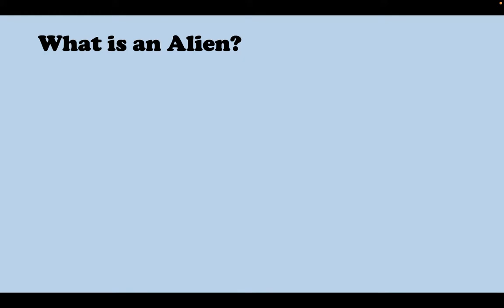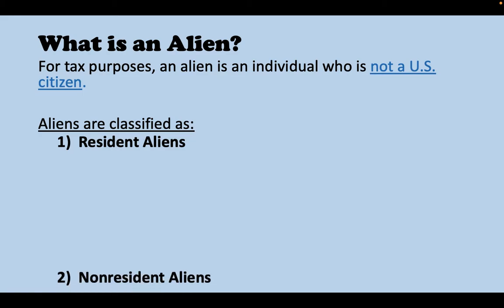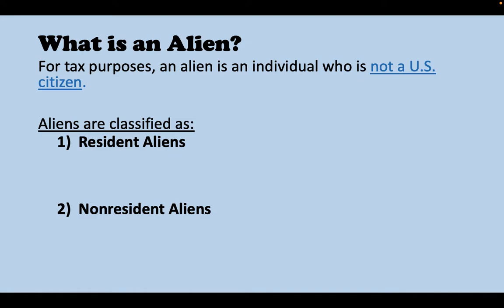What is an alien? For tax purposes, an alien is an individual who is not a U.S. citizen. I want to clarify that we're talking about tax law here, which is different from immigration law. Some terms used in immigration may not apply to tax law, so you want to follow the definition of tax law to understand your filing status. If you are not a U.S. citizen, you are called an alien. Aliens are then classified as either a resident alien or non-resident alien.